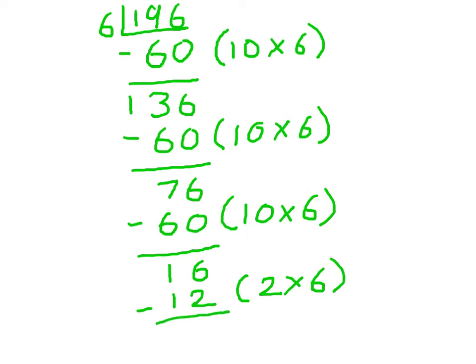And that leaves me with 4 at the end. And all I need to do now to give me the answer is add the lots of 6 that I've put in the brackets here. And that will give me a total of 32 and remainder 4. And that's using the chunking method for division.